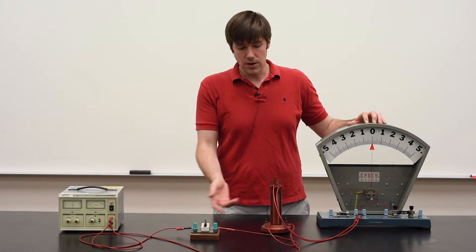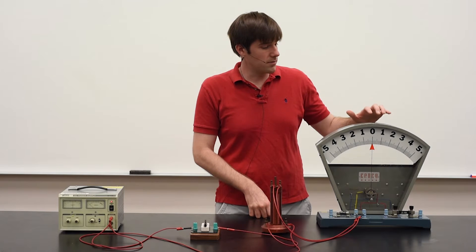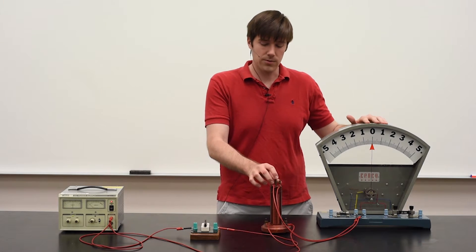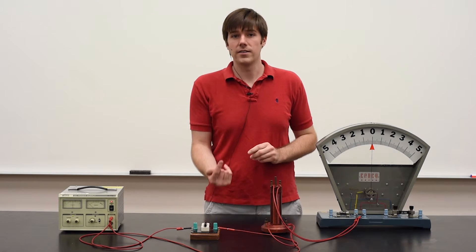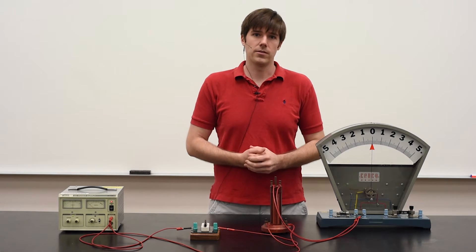Now, there's still a current going through the primary coils, but you notice that there's no current going through the secondary coils. And this is because the flux is no longer changing. We have a constant magnetic field within the coils.